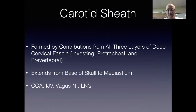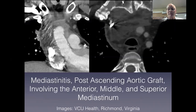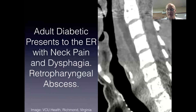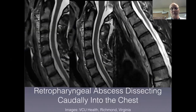The carotid sheath is formed by contributions from all three layers of the deep cervical fascia. It extends from the base of the skull well into the chest and contains the common carotid artery, internal jugular vein, and vagus nerve on either side. An example of mediastinitis: this patient is recently post-surgical repair of the ascending thoracic aorta with an interposition graft and has developed mediastinitis involving both the anterior and middle mediastinum, extending superiorly to also involve the superior mediastinum. Another example is a retropharyngeal abscess with a lenticular-shaped peripherally enhancing fluid collection extending from C2 through C5. After surgical drainage, MRI demonstrates the abscess extending from C2 through the entire neck, thoracic inlet, supermediastinum, and down to the T6 level.